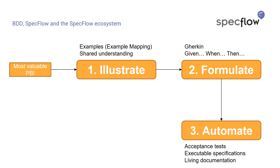The third phase in the BDD process is the automation phase. This is where we create automated acceptance tests, also known as executable specifications, from the specifications we created. Because they describe the intended behavior of the feature or system that we're building, they automatically also form living documentation. The big benefit of using such a technique over regular documentation or specification in Word documents is that these are executable, so you get immediate feedback about whether or not the system you build conforms to the specifications.